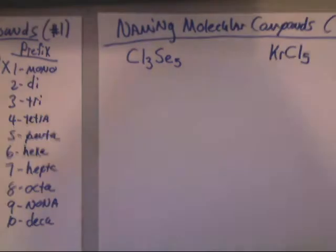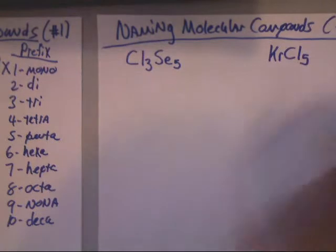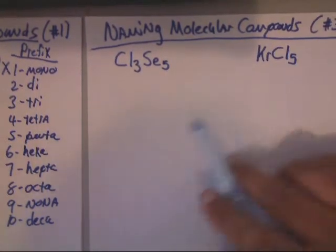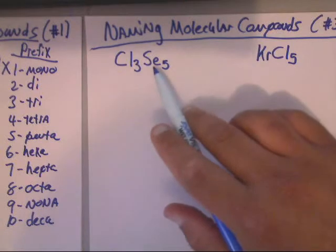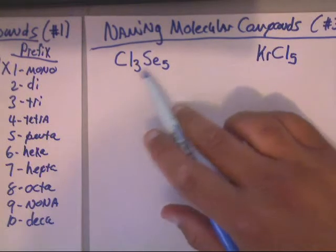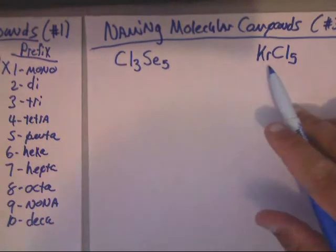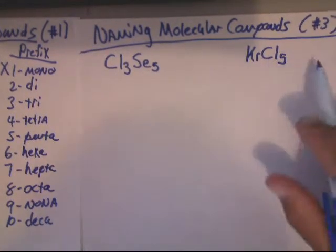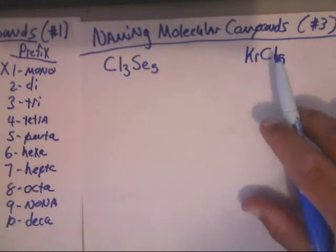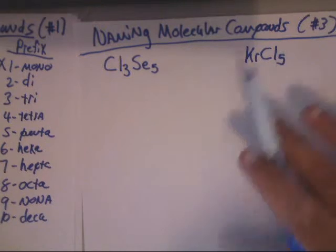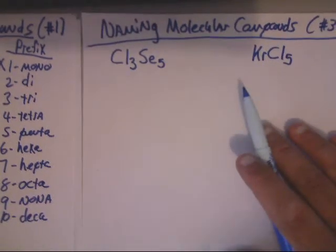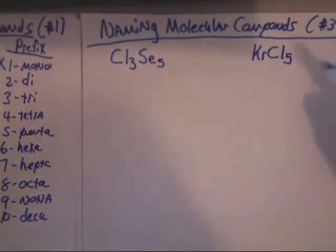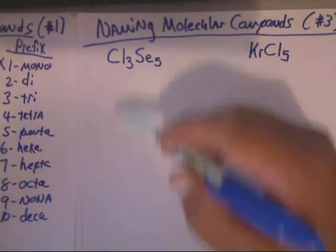In this video, we're going to learn — this is the third video — I'm going to show you how to name a compound involving a metalloid and one with a noble gas. You're going to learn how to name two compounds in this third video. As you can see, I'm trying to squeeze in the prefixes on the side from the very first video, so you can always have access to them.